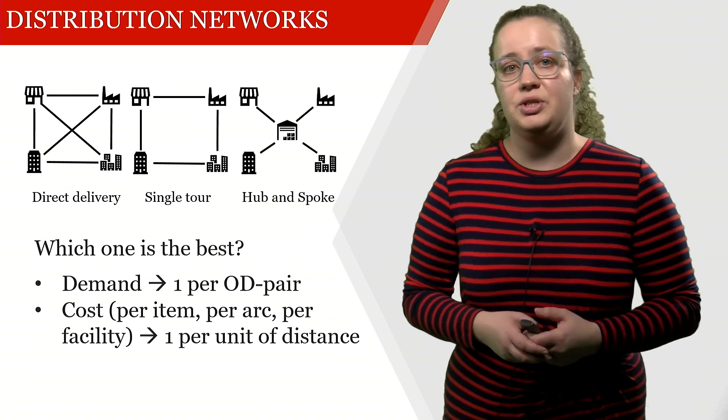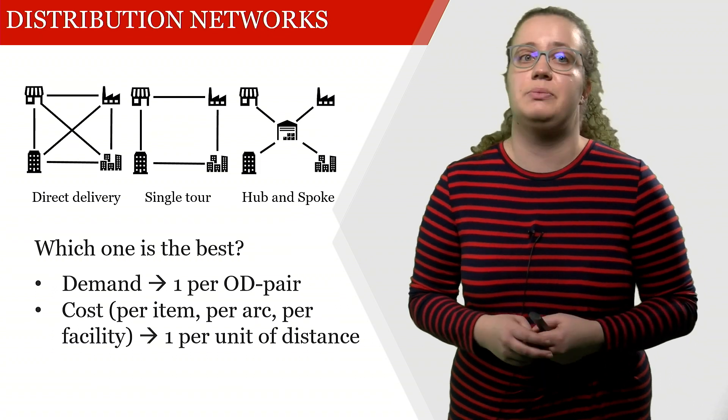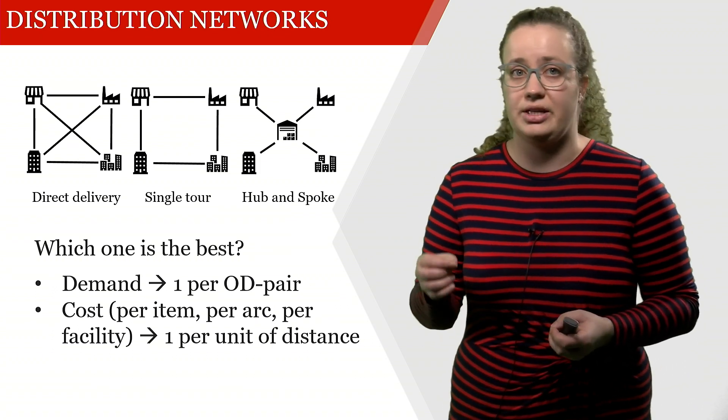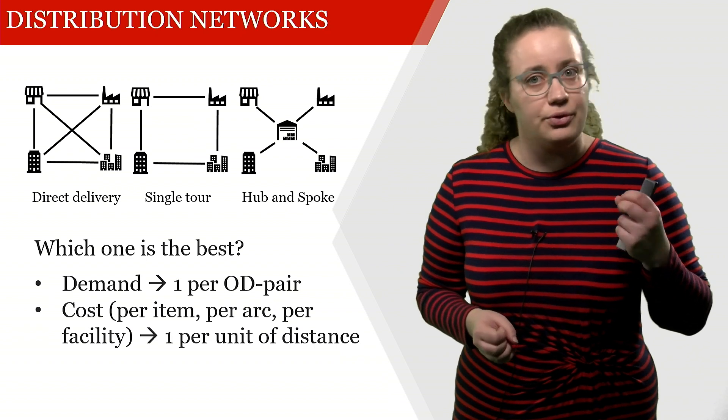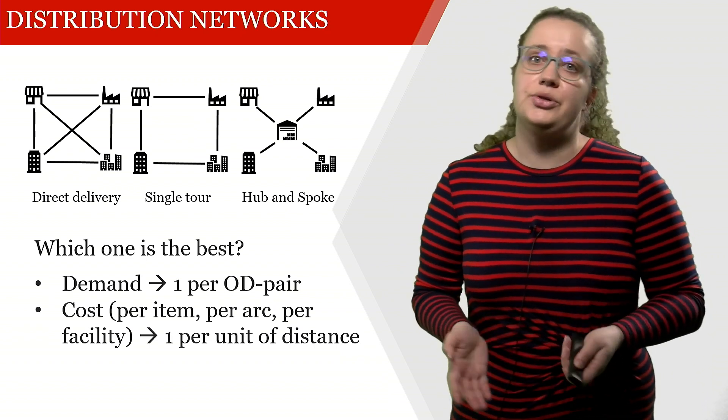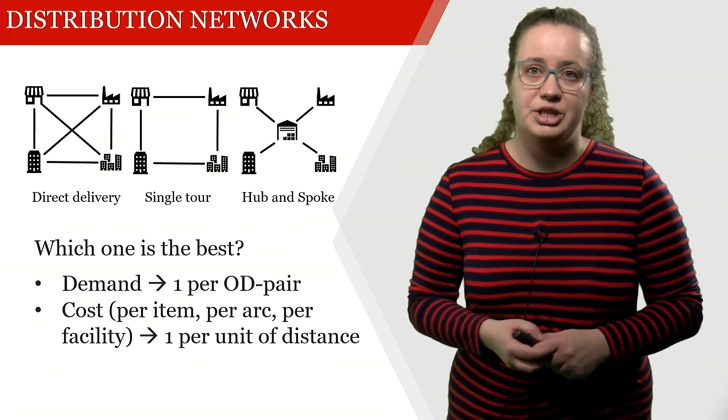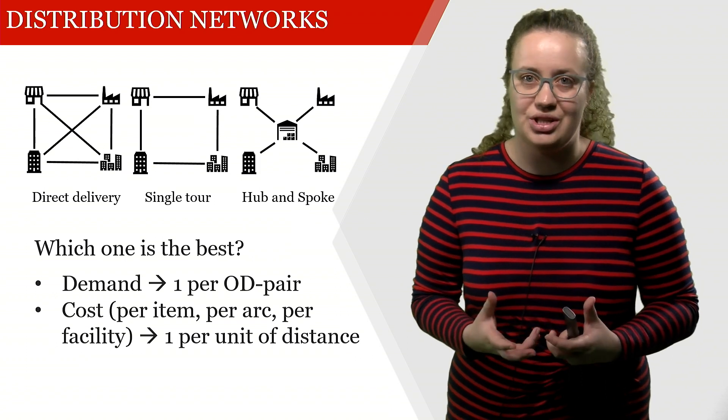We have a demand which is one for each origin destination pair. For instance, we have one item that needs to be shipped from the store to the factory and one from the store to each of the two consumers, but also vice versa. Then we're going to look at how expensive each of these solutions are.